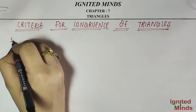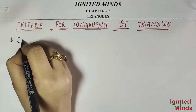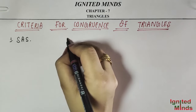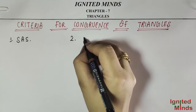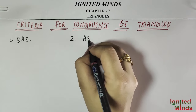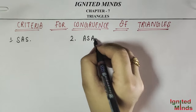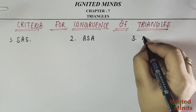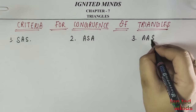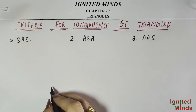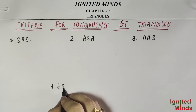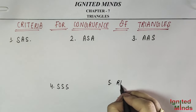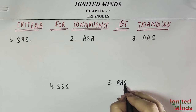The five criteria are: Number 1, SAS. Number 2, ASA. Number 3, AAS. Number 4, SSS. And number 5, RHS.